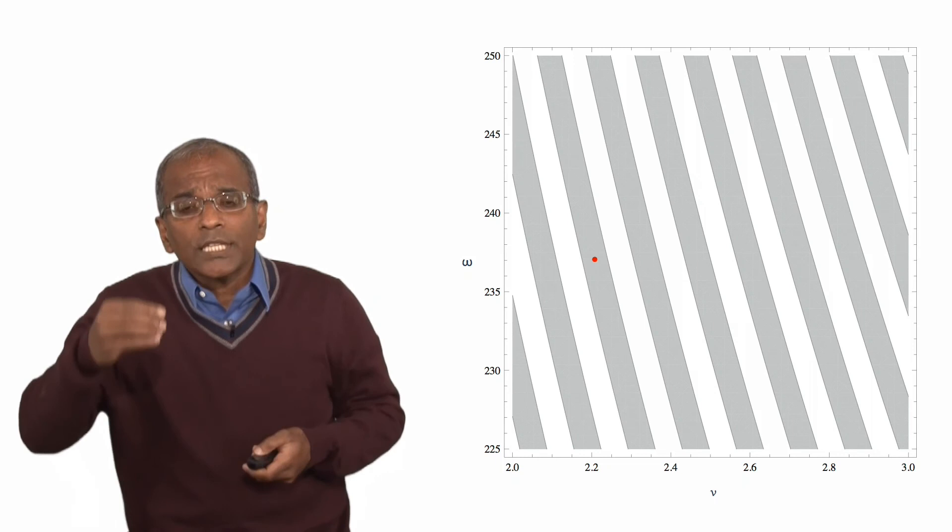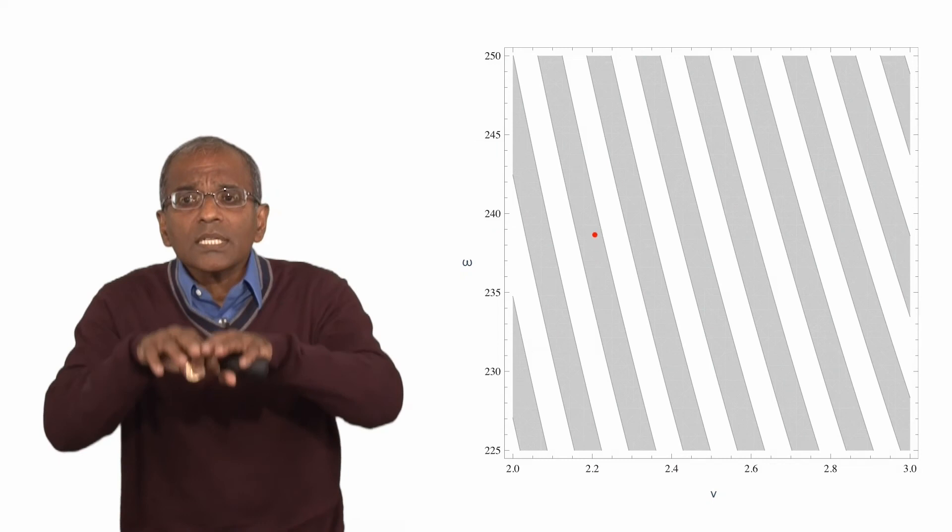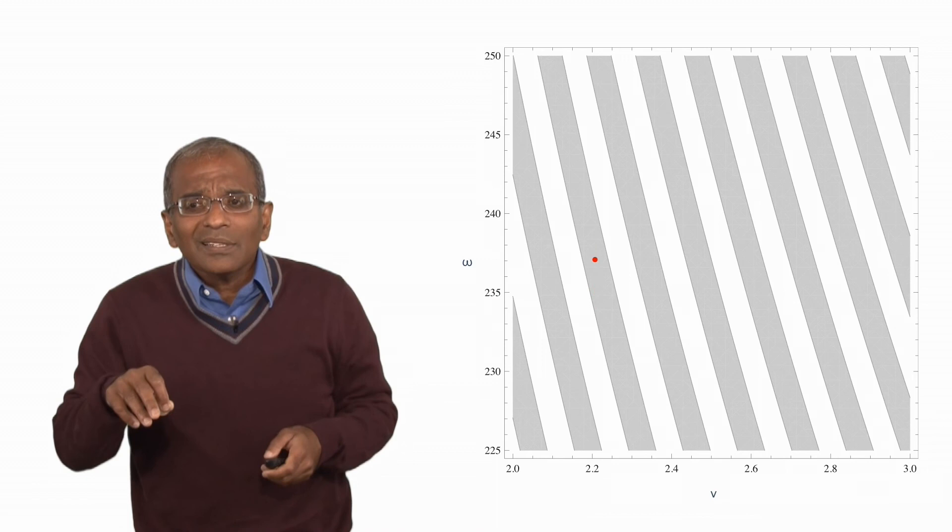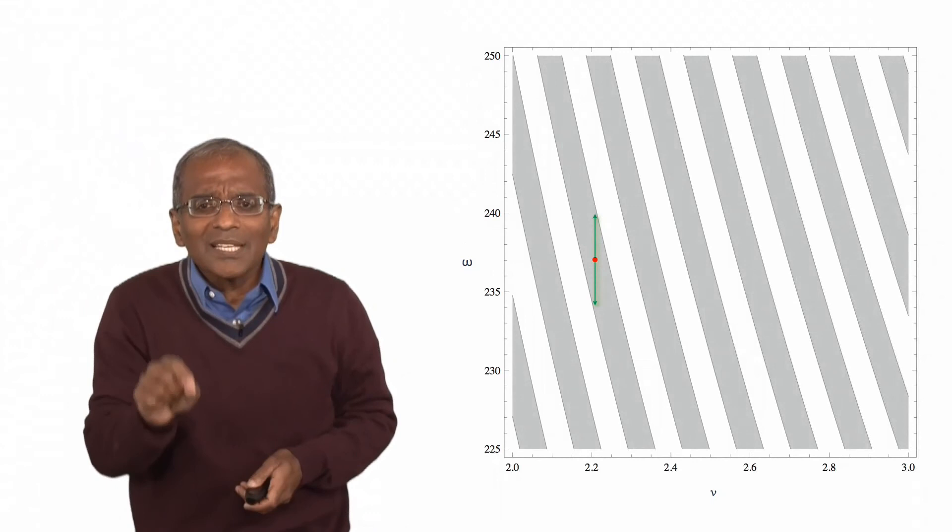Now, suppose there is some uncertainty in the angular velocity, the rate at which the coin is turning. Now, see what happens. So, if there is uncertainty there, then you are up and down in a certain region, but you never leave a band. The bands are almost vertical here, and so vertical uncertainties don't seem to matter very much.